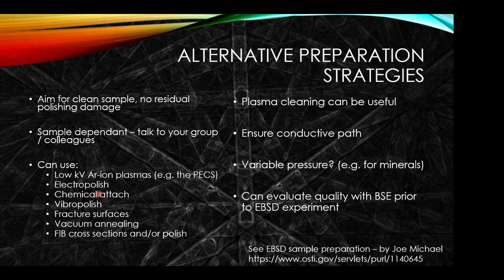In some materials a vacuum annealing process can clean up and remove surface defects. You could do FIB cross-sectioning and FIB polishing for certain samples like particles — for instance if you want to look inside gas atomized particles. Plasma cleaning of your samples will be useful to remove hydrocarbons, which can be particularly bad in terms of contamination especially at the high probe currents, voltages, and long dwell times for EBSD. You want to ensure a conductive path in your sample. For some mineralogy experiments you may want variable pressure, and you can evaluate quality with backscatter electron imaging prior to the EBSD experiment.